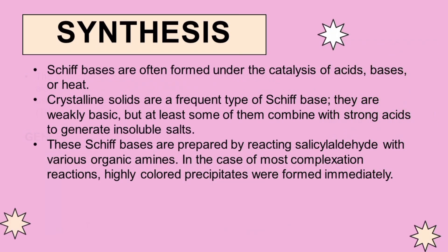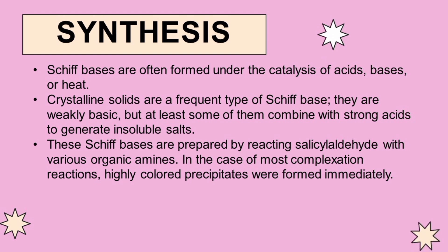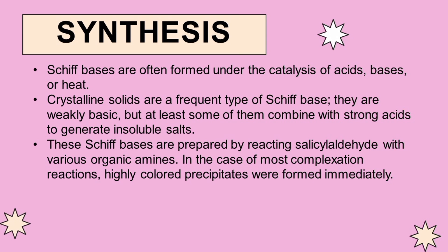Schiff bases are formed under the catalysis of acid or base and under heat. Crystalline solids are the most frequent form of Schiff bases. They are weakly basic, but at least some of them combine with strong acids to generate insoluble salts. Schiff bases can also be prepared by the reaction of salicylaldehyde with various organic amines, where highly colored precipitates form immediately.